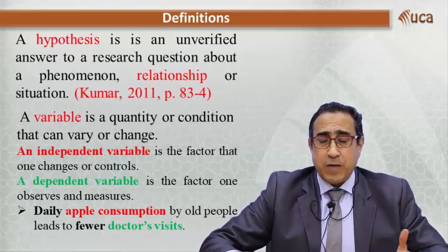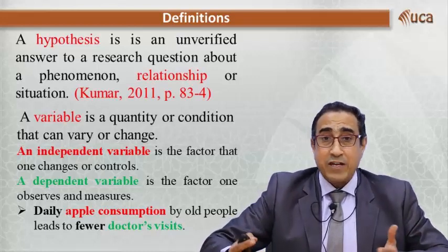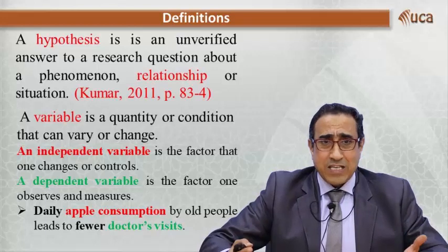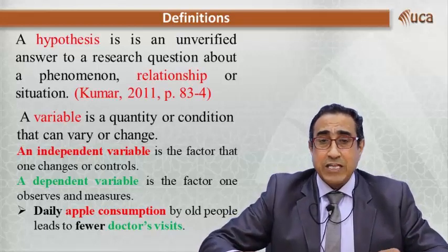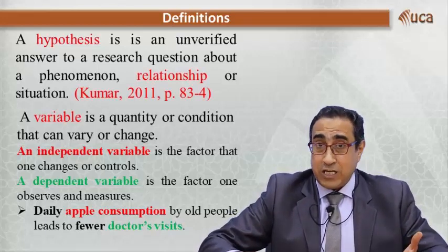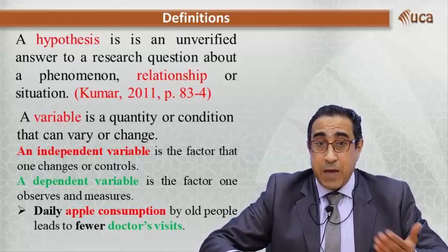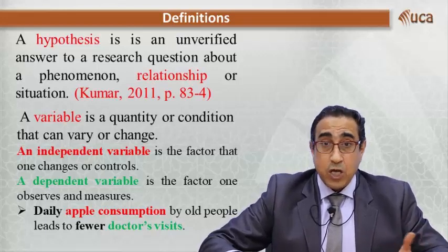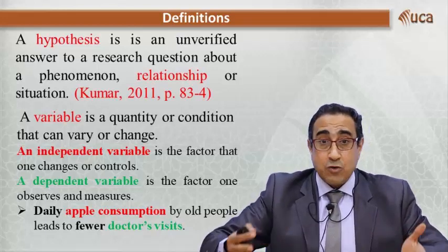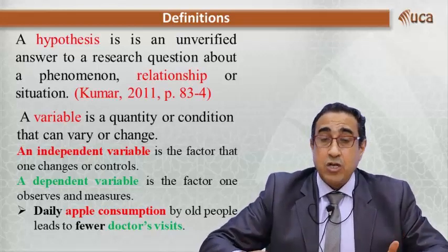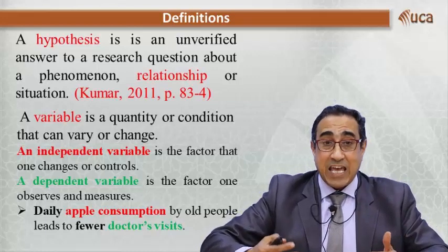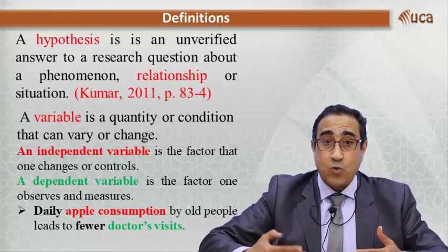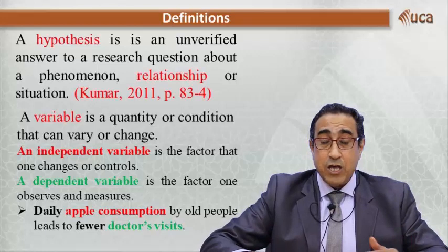A hypothesis concerns the relationship between variables. So, what is a variable? A variable is a quantity — it can be numbers, statistics, a quantity, or a condition or situation that can change or vary. That is why it is called a variable.